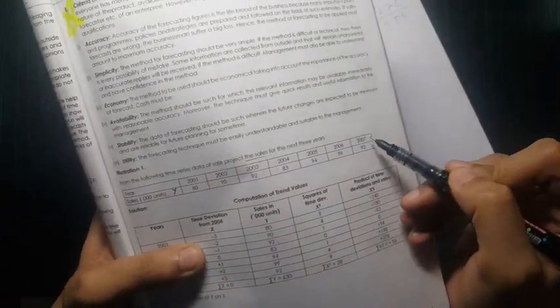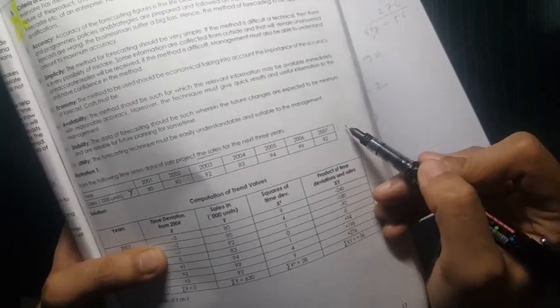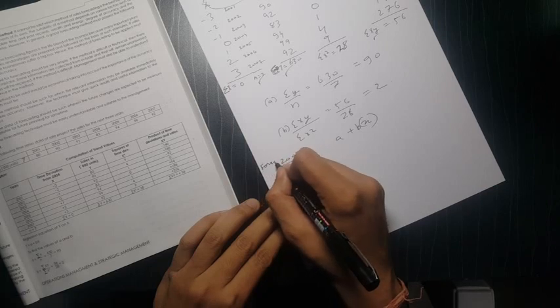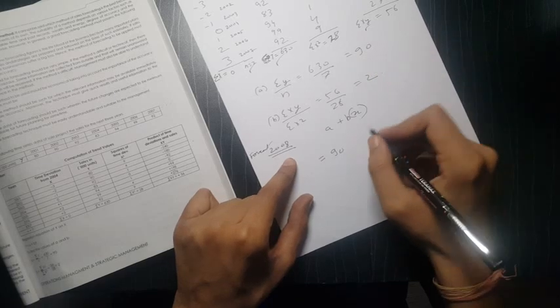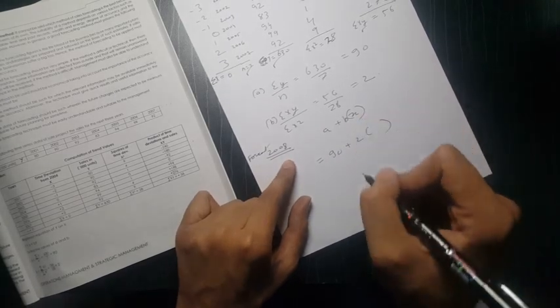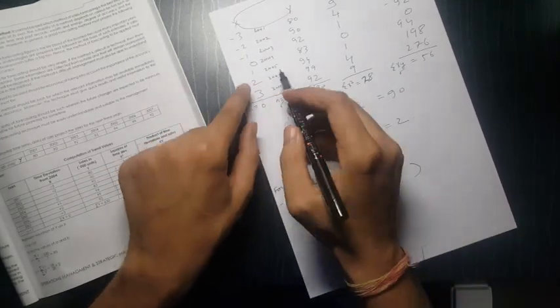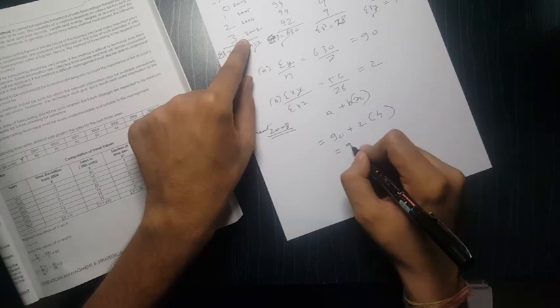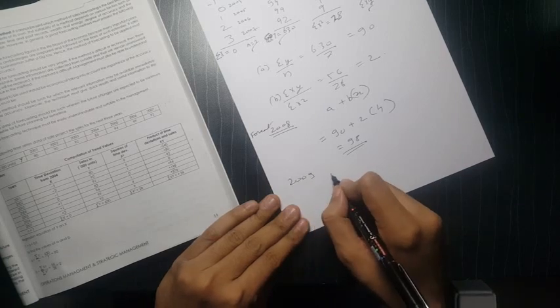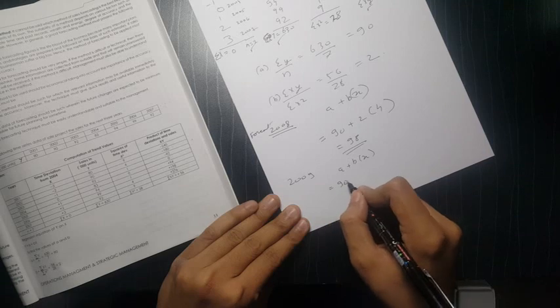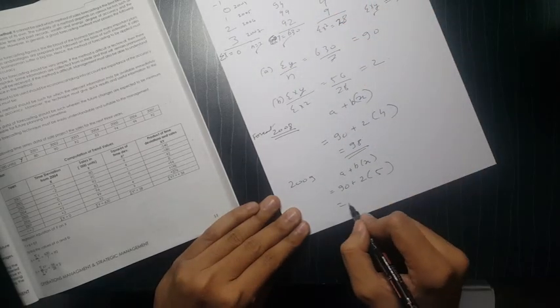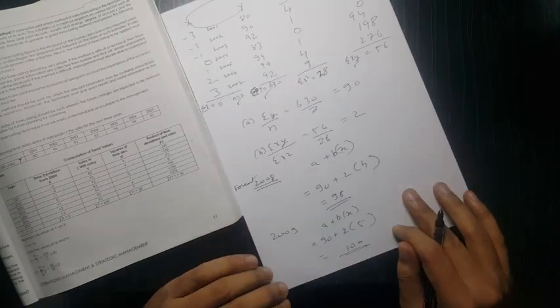X toh apne ko nikal na hai. Now question ke andar kya diya hai? Project the sale for next 3 years. Toh 2007 tak ke, yani 2008, 2009, 2010 we have to find out. So first let's find out 2008. So for 2008, forecast of sale for 2008 is A is given 90, we have calculated plus b is 2, and what is x? Yehi toh dikkat karega. So x is if x is 3 for 2007, what is x for 2008? Obviously it's 4. And if you solve, it will come to 98.